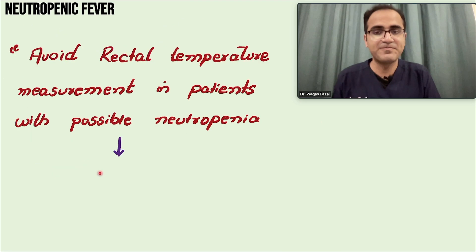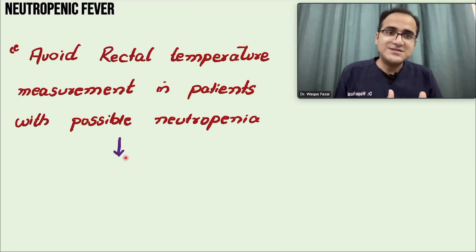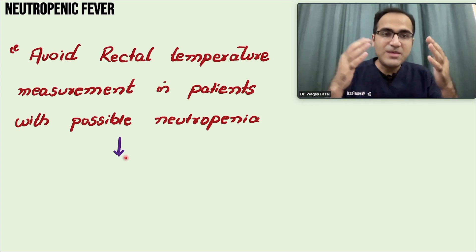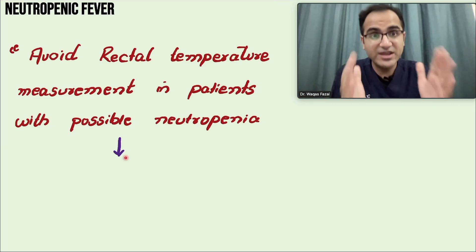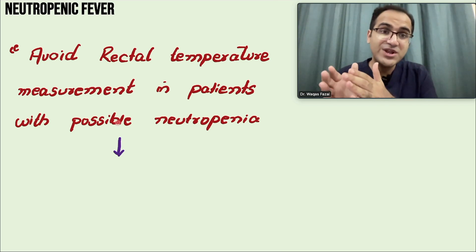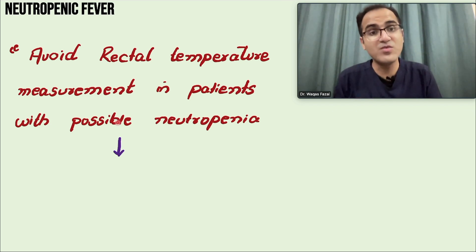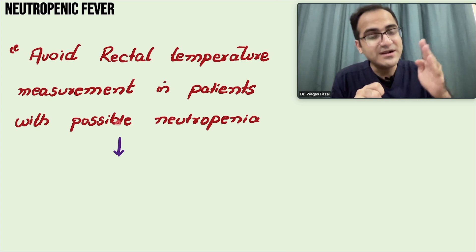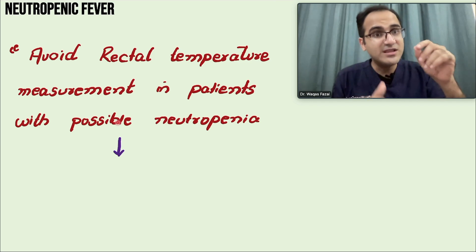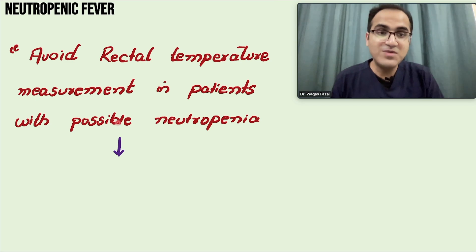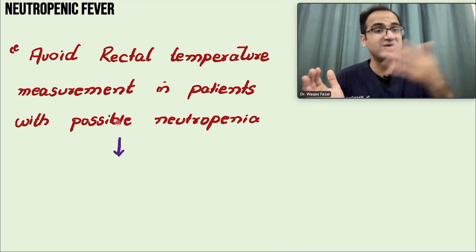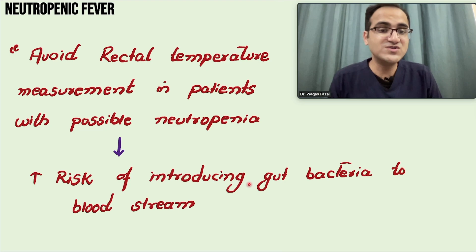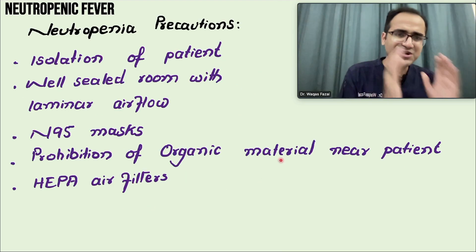An important point: this patient presents with fever, and while rectal temperature is the most accurate method, in patients with neutropenia you avoid rectal temperature checks. Passing a probe through the rectum risks injuring or tearing the gut mucosa, introducing bacteria into the bloodstream, increasing the risk of further infections in these already immunocompromised patients.